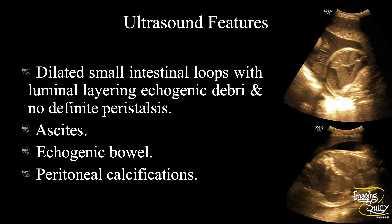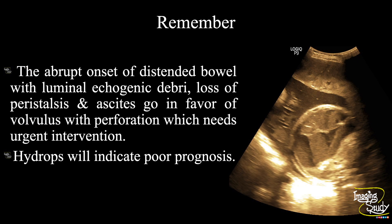In summary, we have seen dilated small intestinal loops with luminal layering echogenic debris and no definite peristalsis. We have seen peritoneal collection (ascites), echogenic bowel, and peritoneal calcifications. The overall features suggest meconium peritonitis due to bowel perforation.